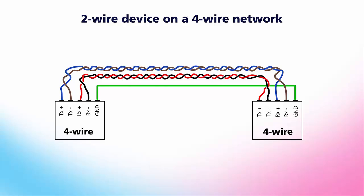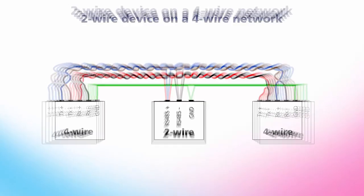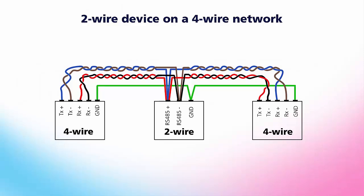If you have an RS-485 four-wire network but want to use a two-wire device, you can simply tie the two positive signals together and the two negative signals together at each device, and you'll have a two-wire device communicating over four wires.